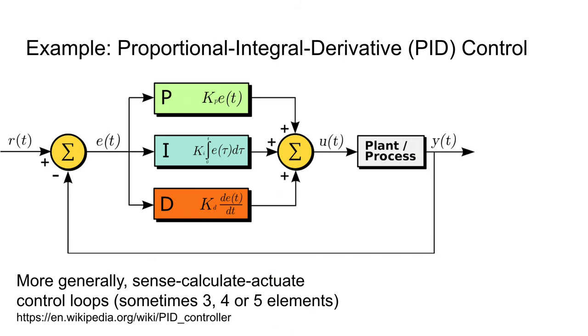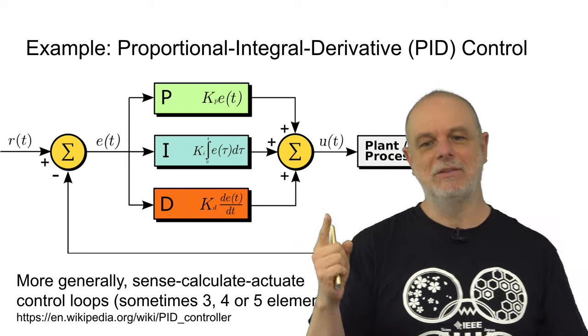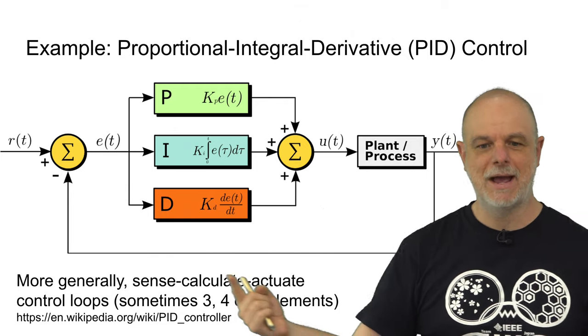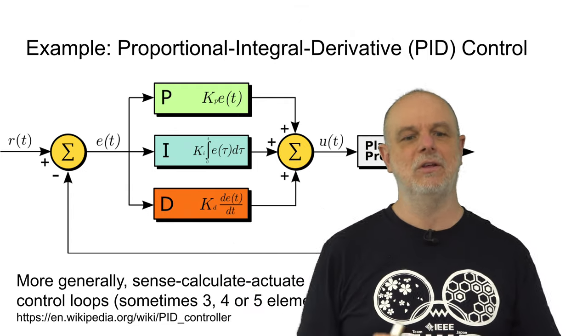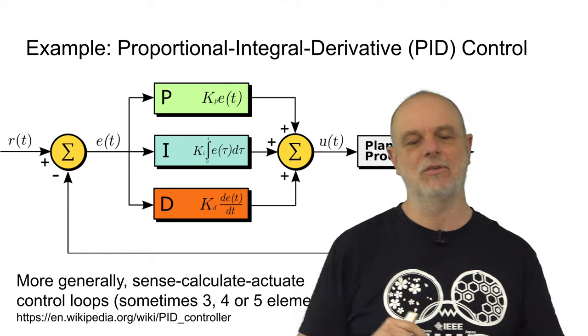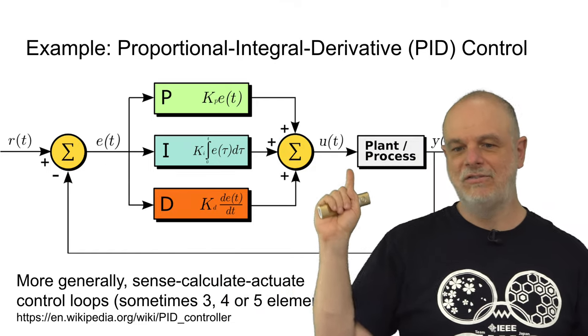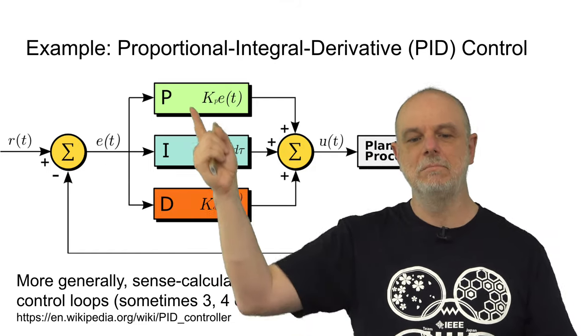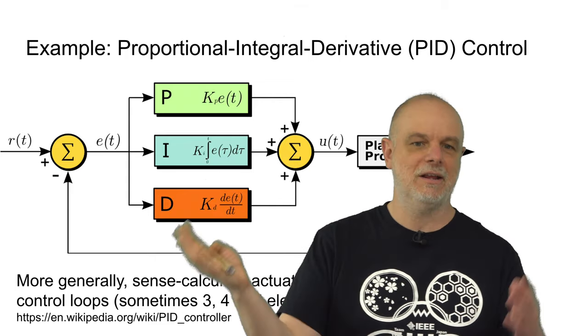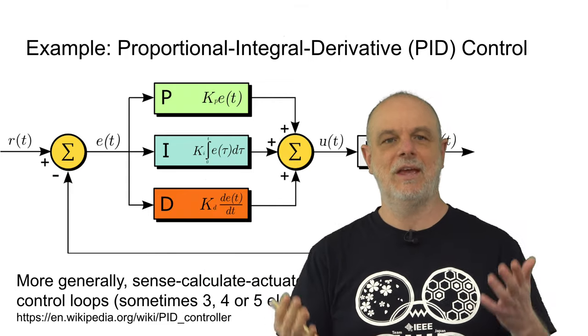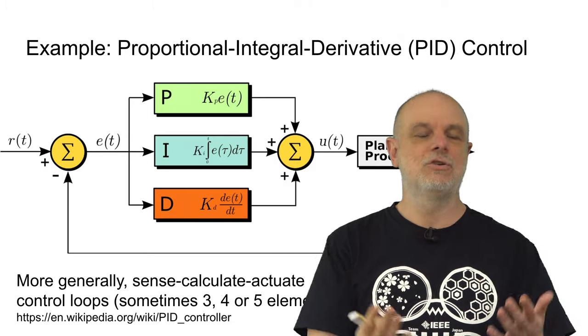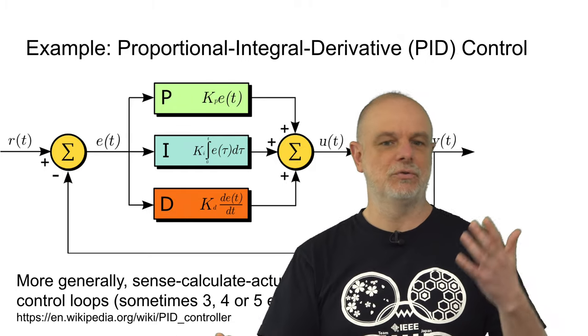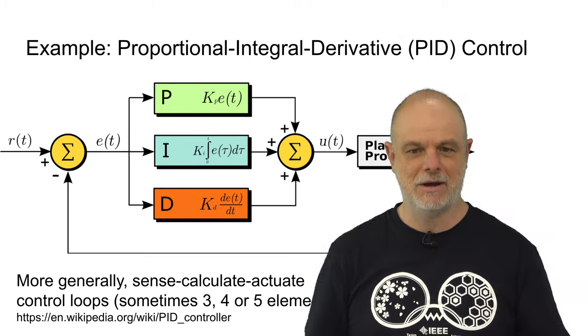But then we measure something about that information, and we feed that information back in this loop over to here on the left, this place where you've got the sigma symbol there. So, there's sensing that's going on. And then here in the middle, we're doing some calculation. And as that calculation happens, in this case, it's three terms, a proportional term, an integral term, and a derivative term, but it doesn't really matter what that is.